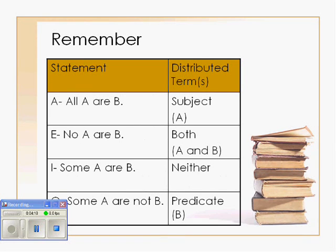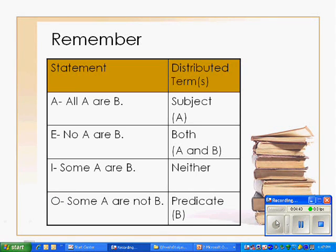For an A statement, the distributed term is the subject — as in 'all A are B.' In an E statement, both terms are distributed: the subject and the predicate. In an I statement, neither term is distributed. And in an O statement, only the predicate is distributed. It's important to remember which terms are distributed in which kinds of statements, because that's going to help us determine if a syllogism is valid or not.